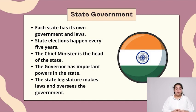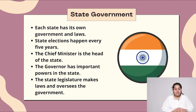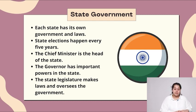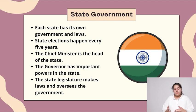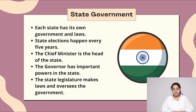State government. Each state has its own government and laws. State elections happen every five years. The chief minister is the head of the state. The governor has important power in the state. The state legislature makes laws and oversees the government.